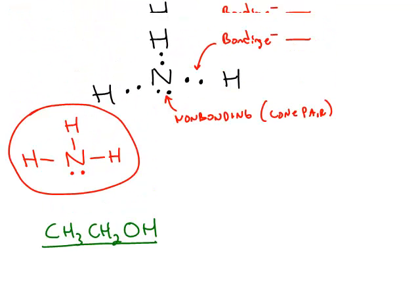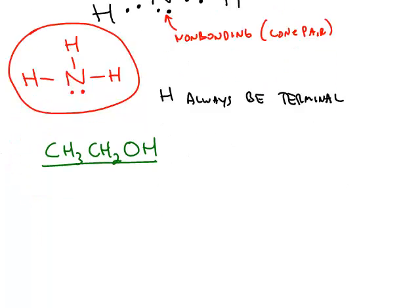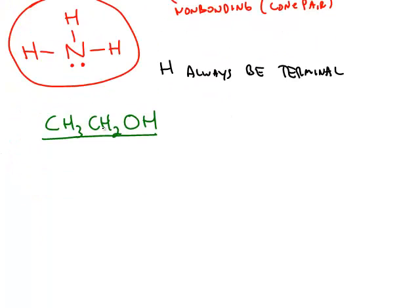Now in the previous example, we showed that hydrogen is satisfied with just two electrons. And hydrogen, because of that fact, will always be terminal. If you tried to put hydrogen as a central atom, you're going to end up putting too many electrons around the hydrogen. So when you see a structure like this one, we know that the hydrogen will be terminal.